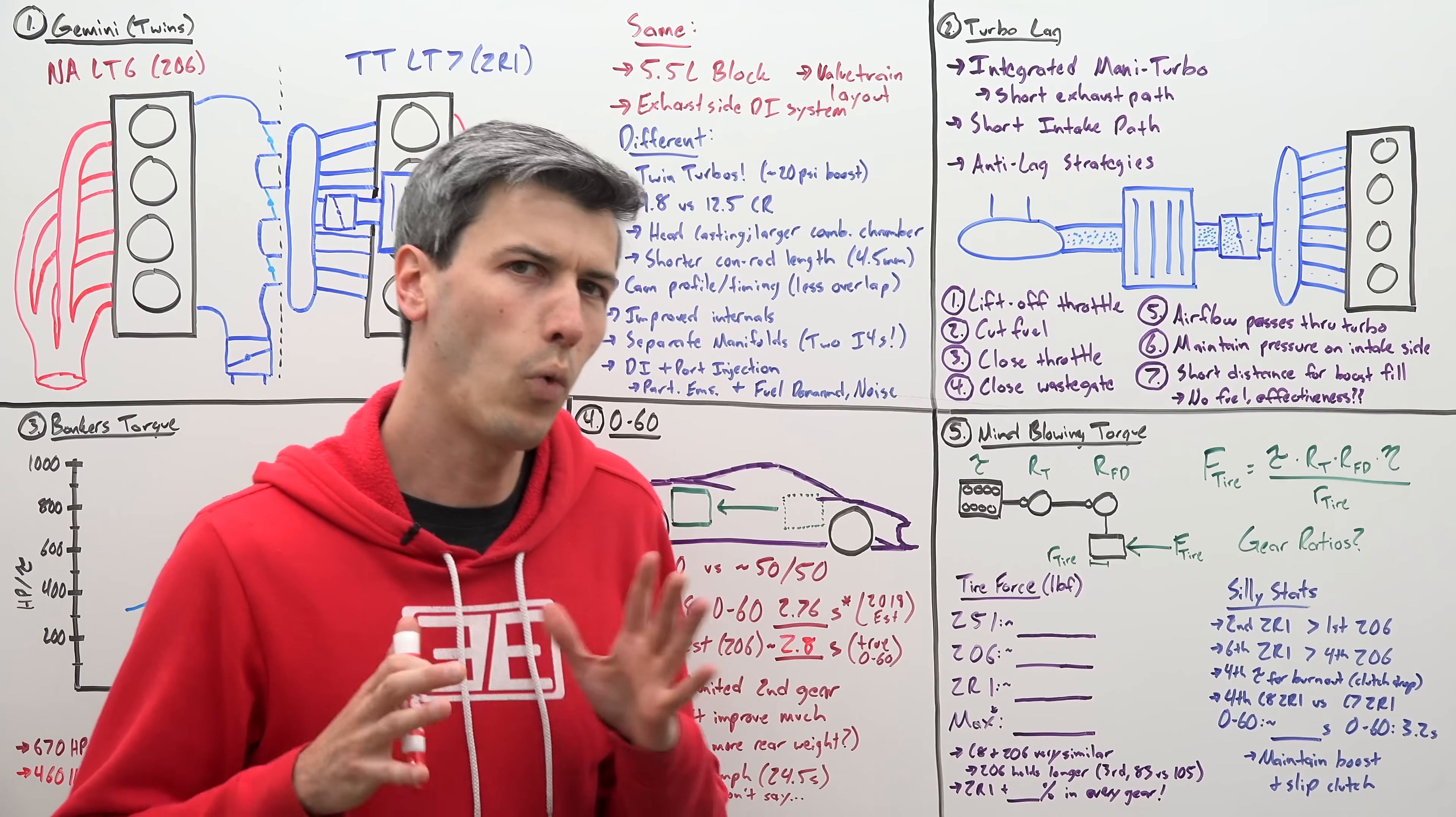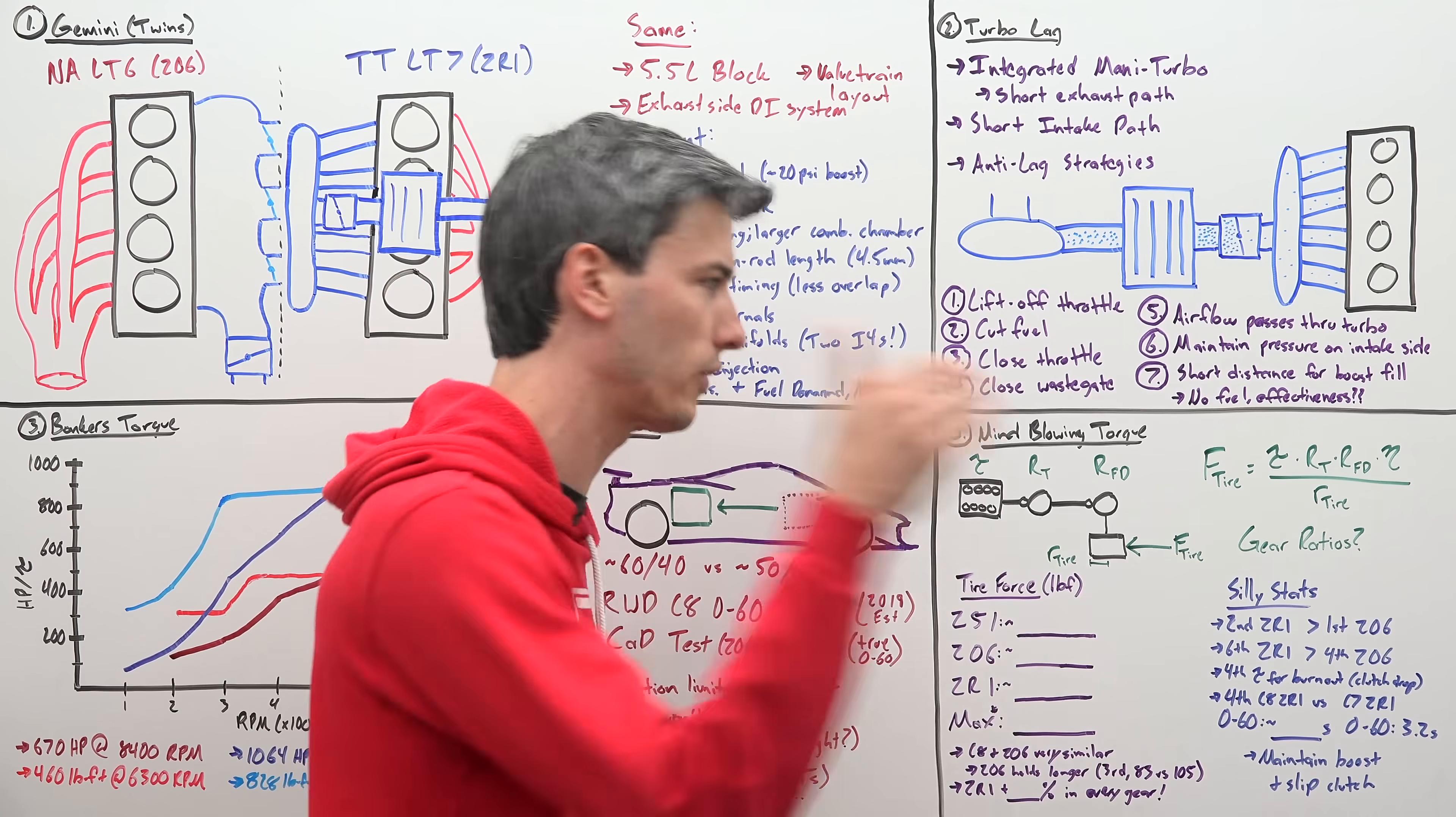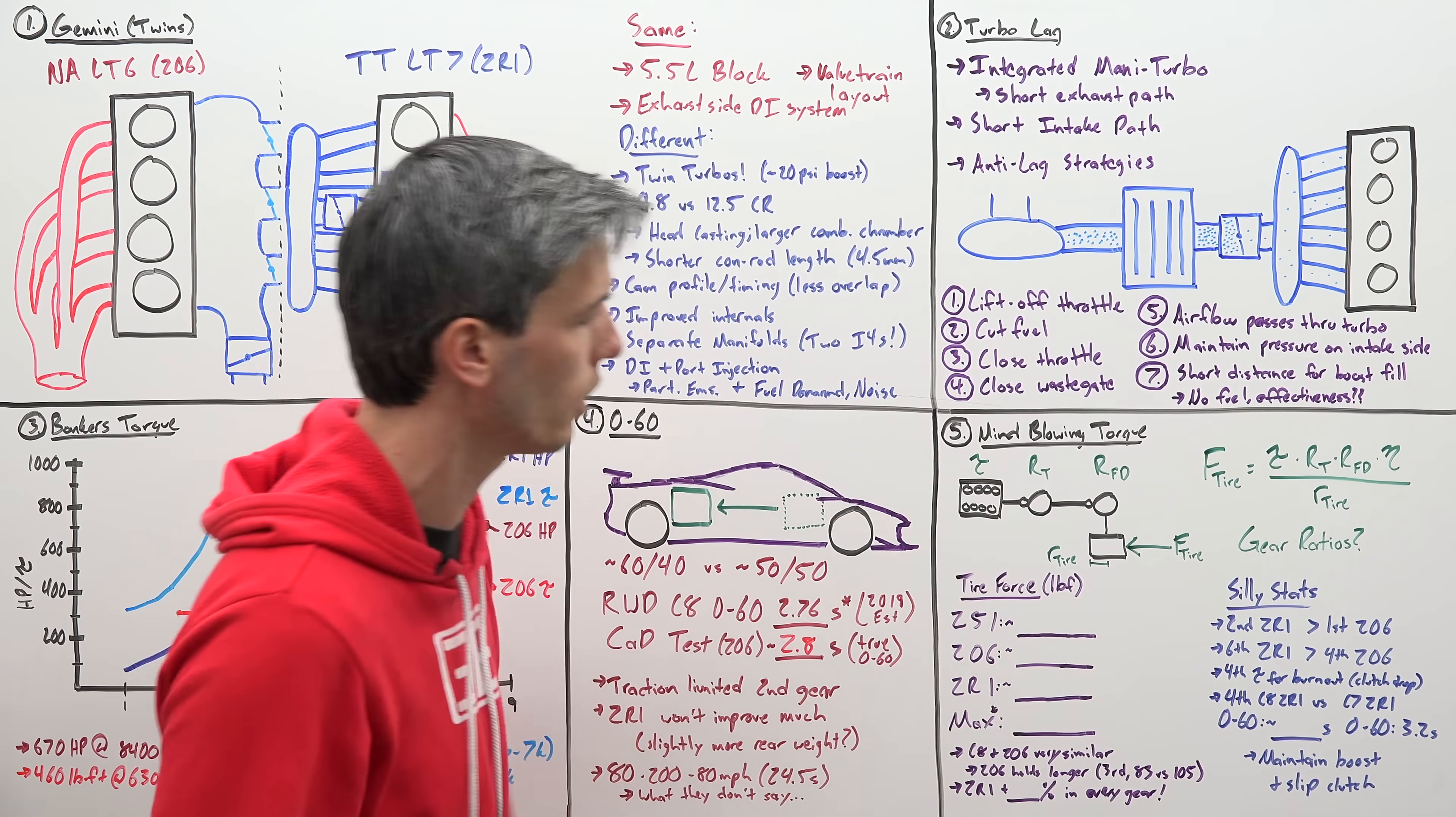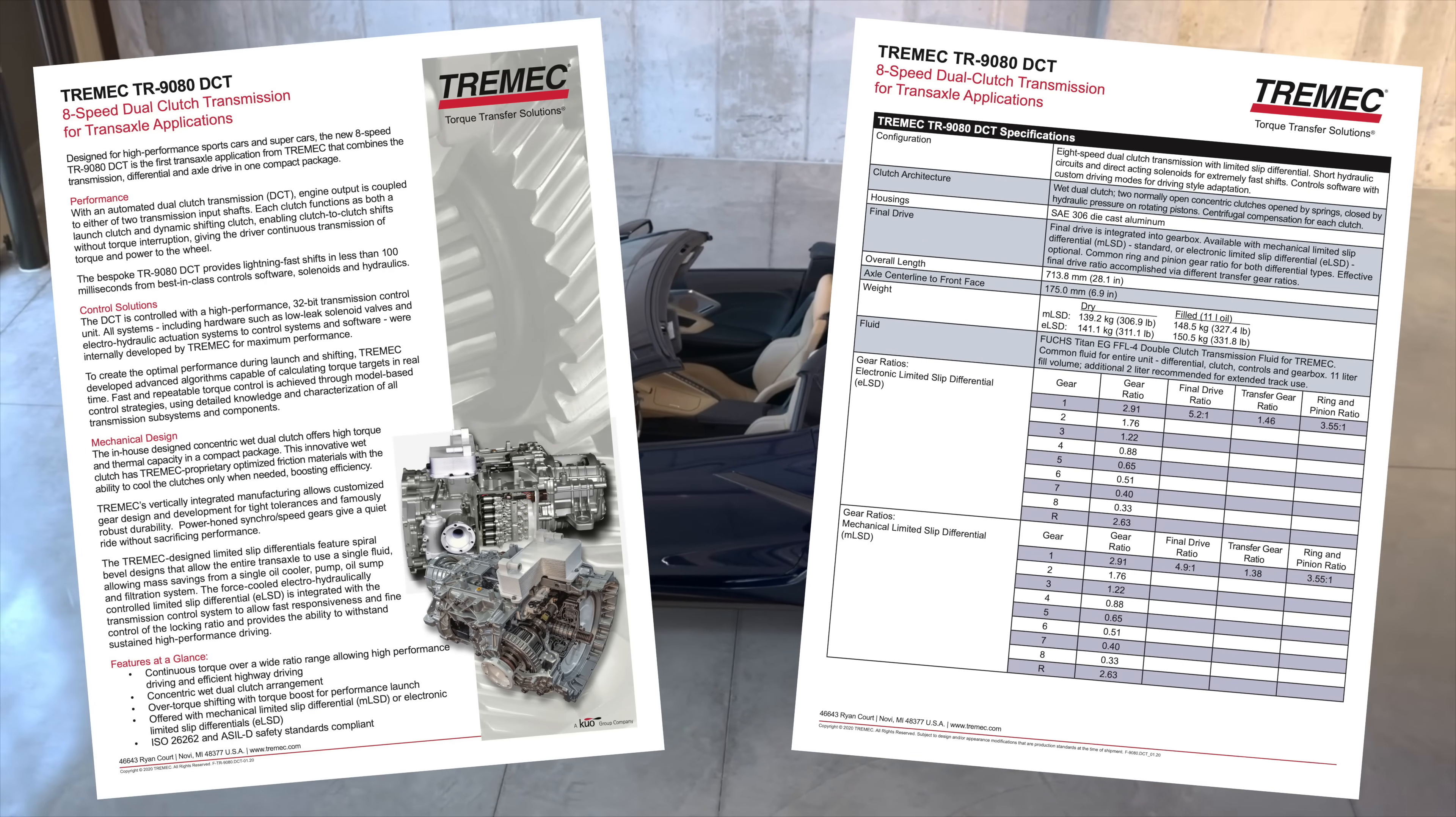Alright, some whiteboard therapy. So in order to understand what we feel pressing us back into the seat as we're driving, we need to understand the force that is being applied to the ground by the tire to accelerate that vehicle. Well, we can calculate this using what we know from the engine torque, the transmission ratios, the final drive ratio, some assumed efficiency, as well as what is the radius of your tire.